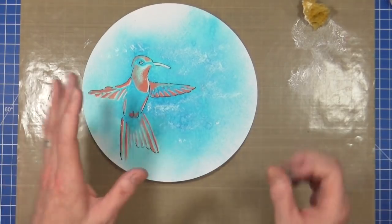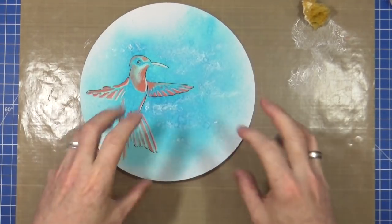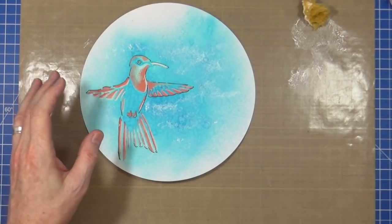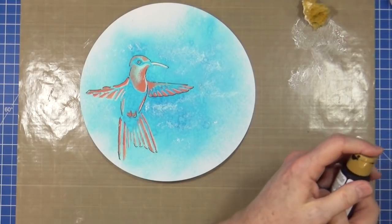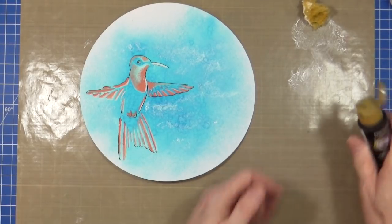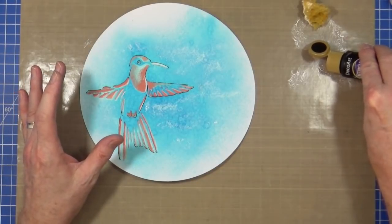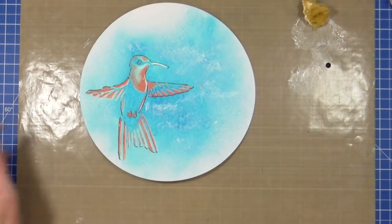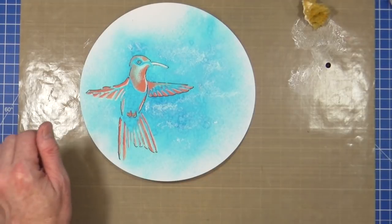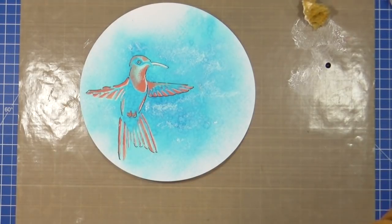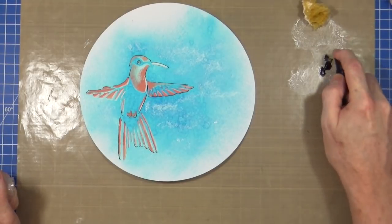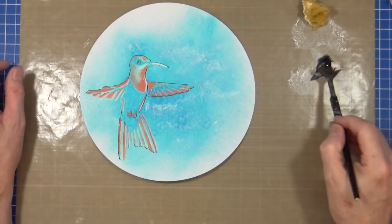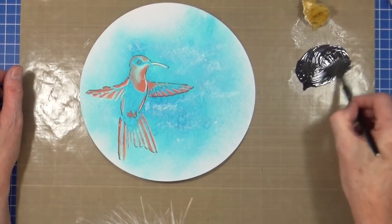So now we've got that I want to add a few little darker spots in the background. So again I've got some black. Or I could use dark blue. No let's use black. Just to bring in those tones that we've got, the low lights or the highlights if you like, the black bits around the bird.